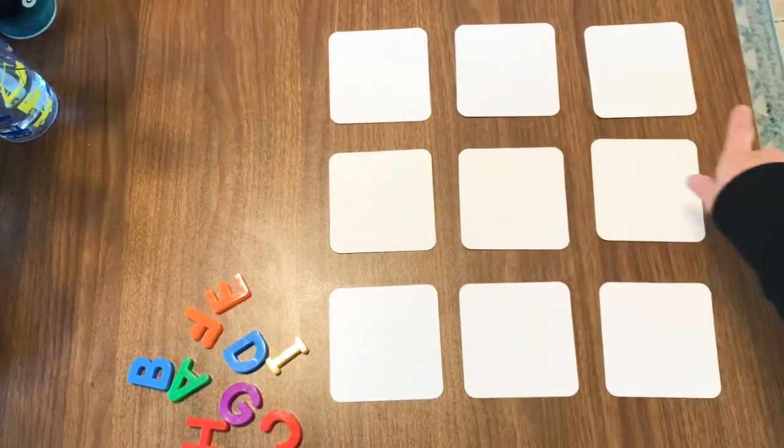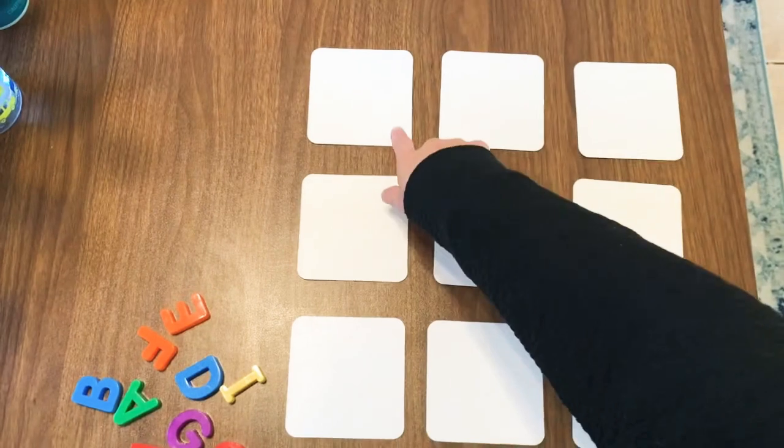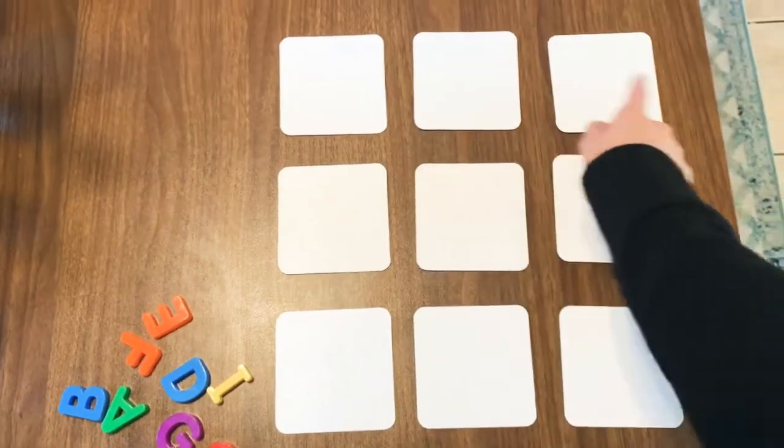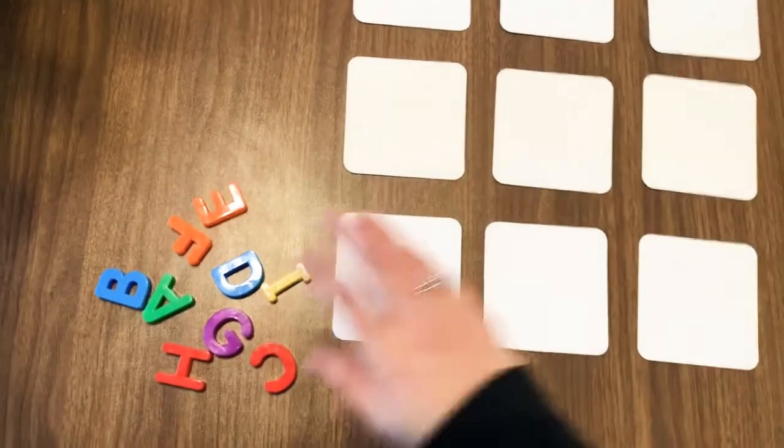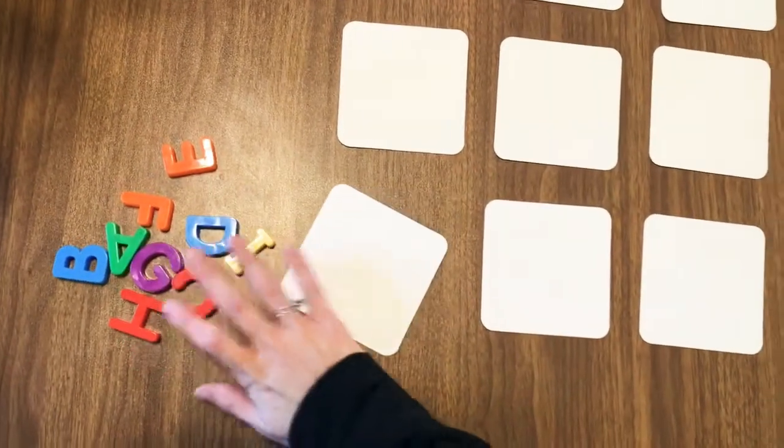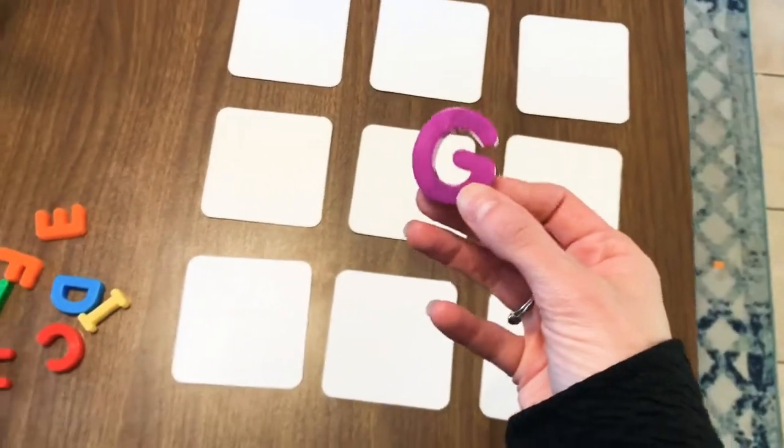All right, I have my flashcards laying face down in rows of three. They are not in alphabetical order, so I don't know where all the letters are hiding, but I do have my magnetic letters right here.